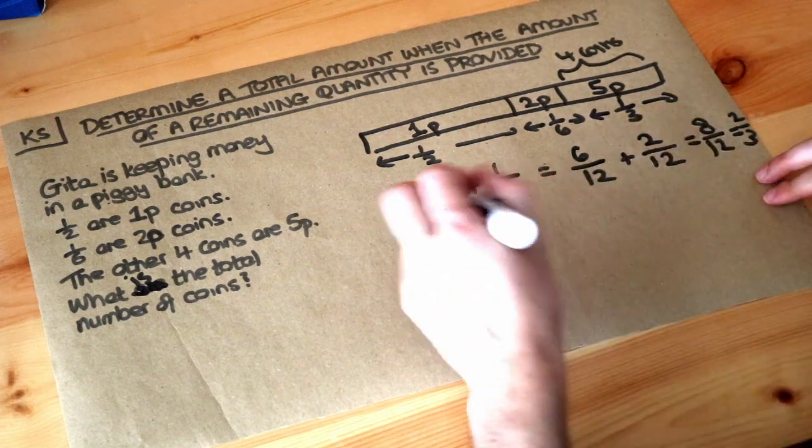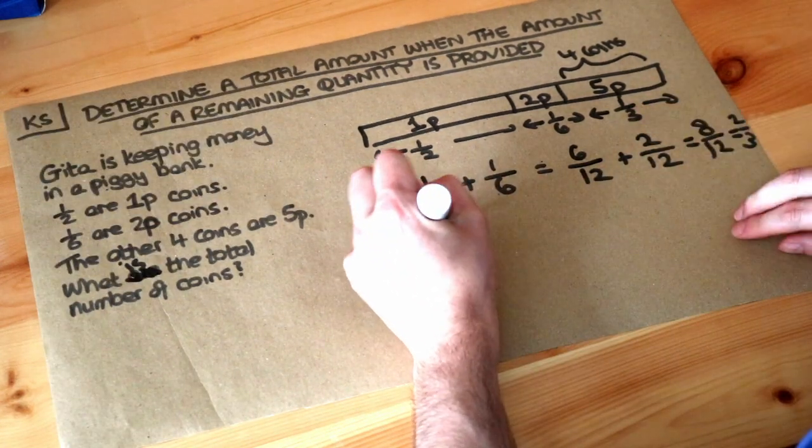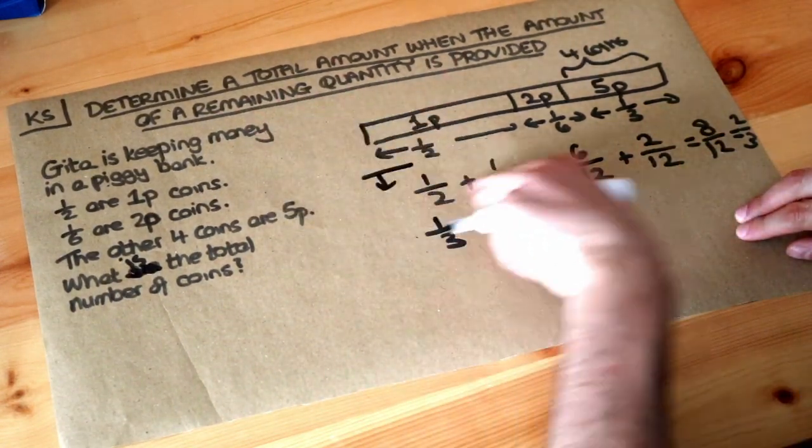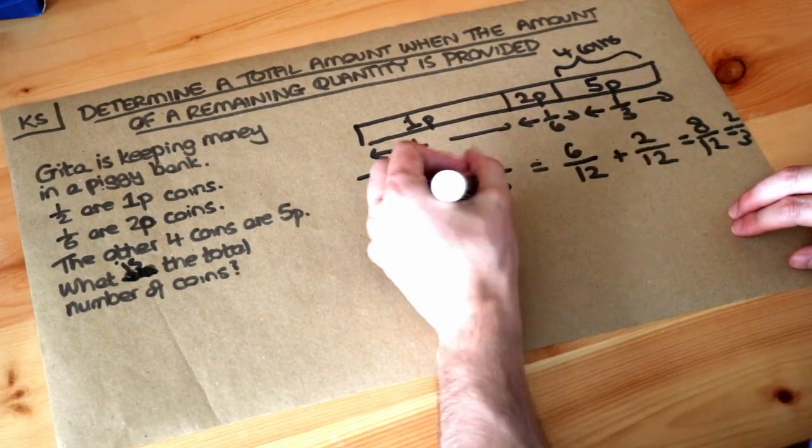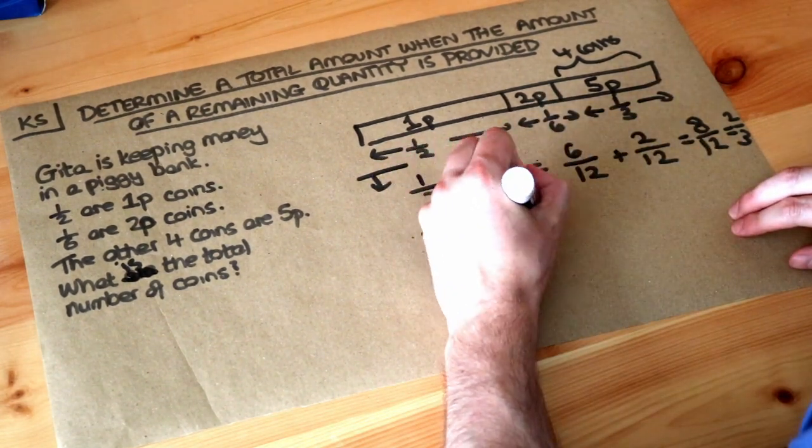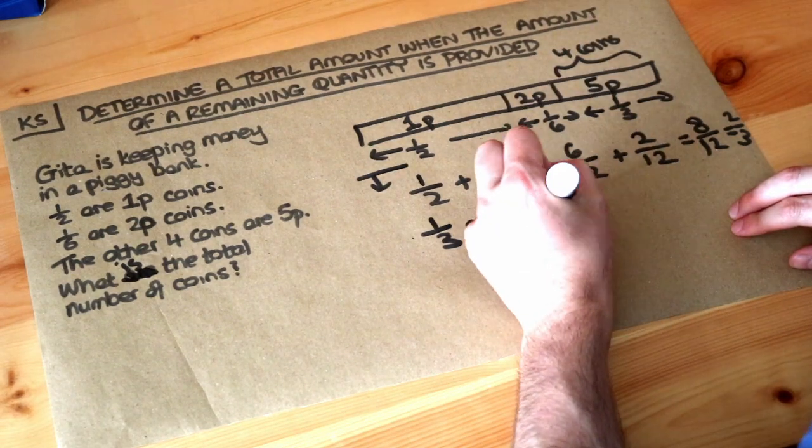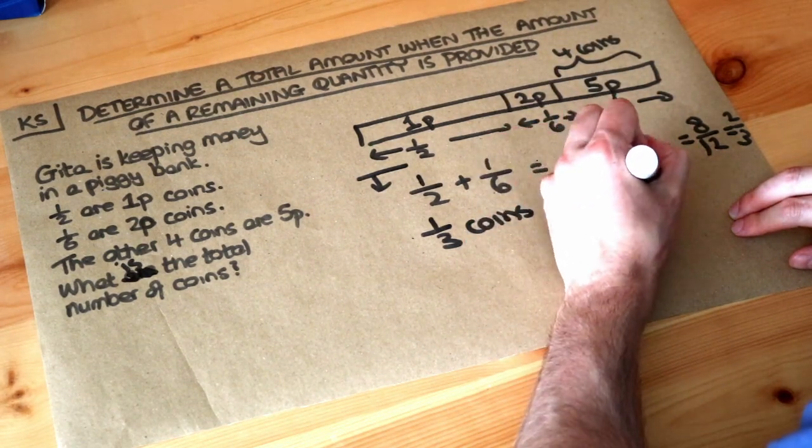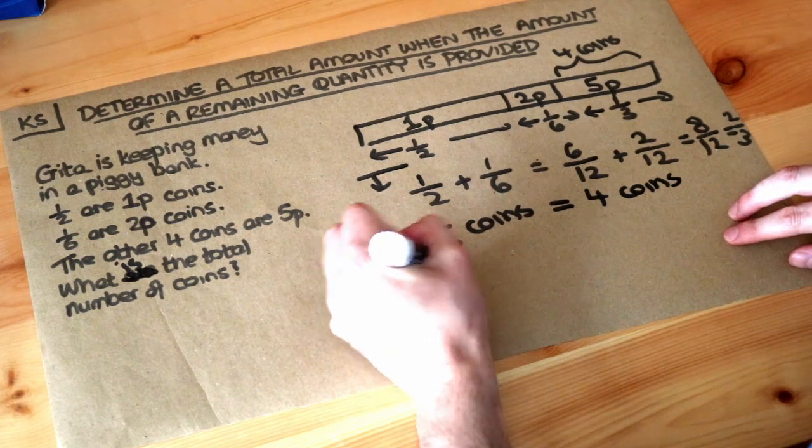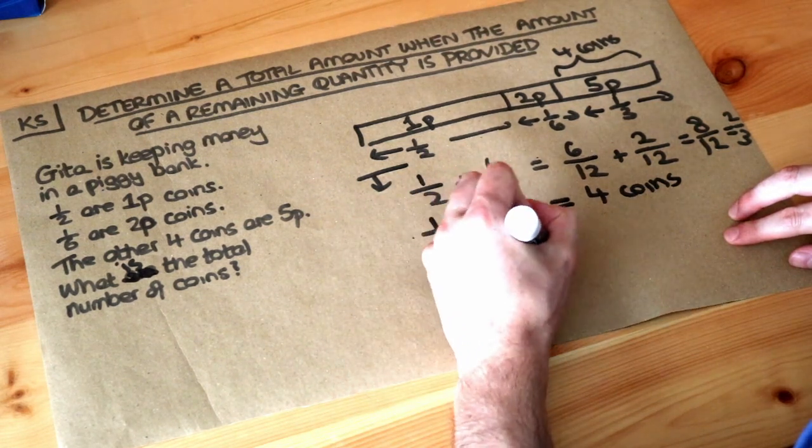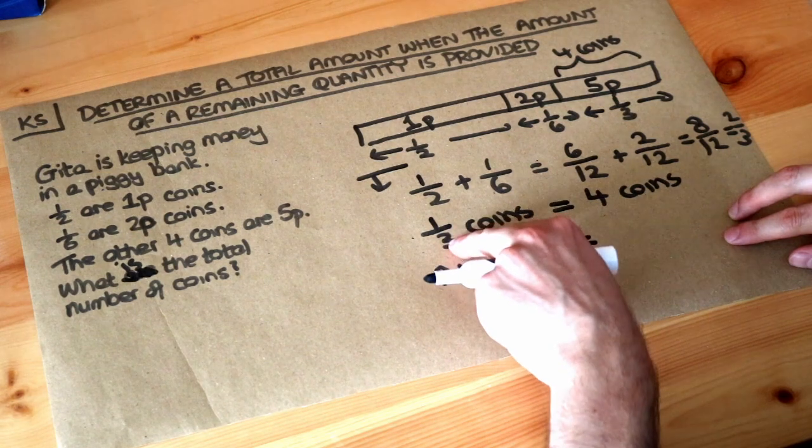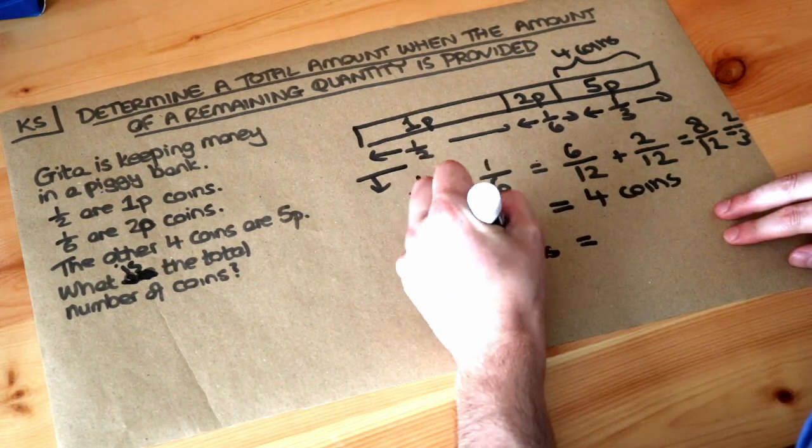Therefore we're getting there. We know that a third of the coins from here onwards is what we'd actually write as our working. So a third of the coins is equal to 4 coins.